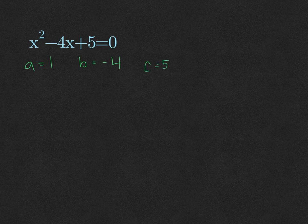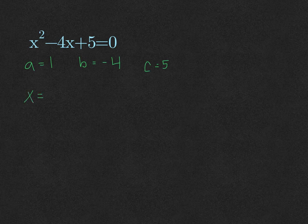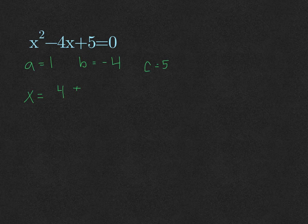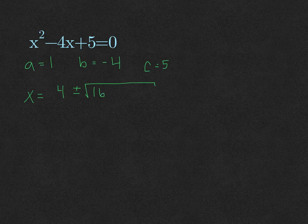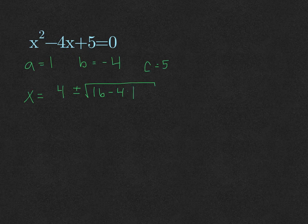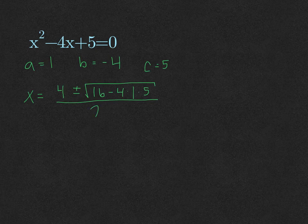We have x is going to equal negative 4, which is 4, plus or minus the square root of negative 4 squared. Negative 4 squared would be 16, minus 4 times your a, which is 1, times your c, which is 5, all over 2a, which is 1.